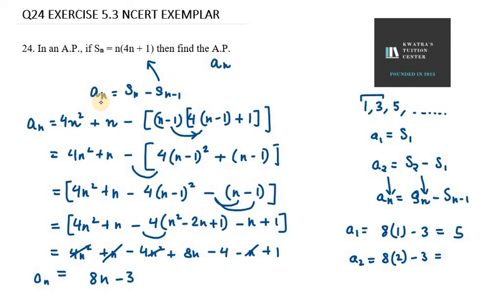A3 will be 8 into 3 minus 3. So you have 24 minus 3. That is 21. So you have AP 5, 13, 21 and so on. So this is your AP for question number 24. Thank you for watching this video. Please like, share and subscribe to our channel.